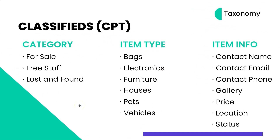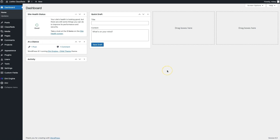Now that we've got all of our data in a way that we can sort it with that custom taxonomy, in this lesson we're going to be adding all of the fields that define each individual classified post. We're going to be using Advanced Custom Fields for that. Jumping back to our planning document, we can see we're adding contact name, contact email, contact phone, gallery, price, location, and status — so we know whether items are still available or animals are still lost.